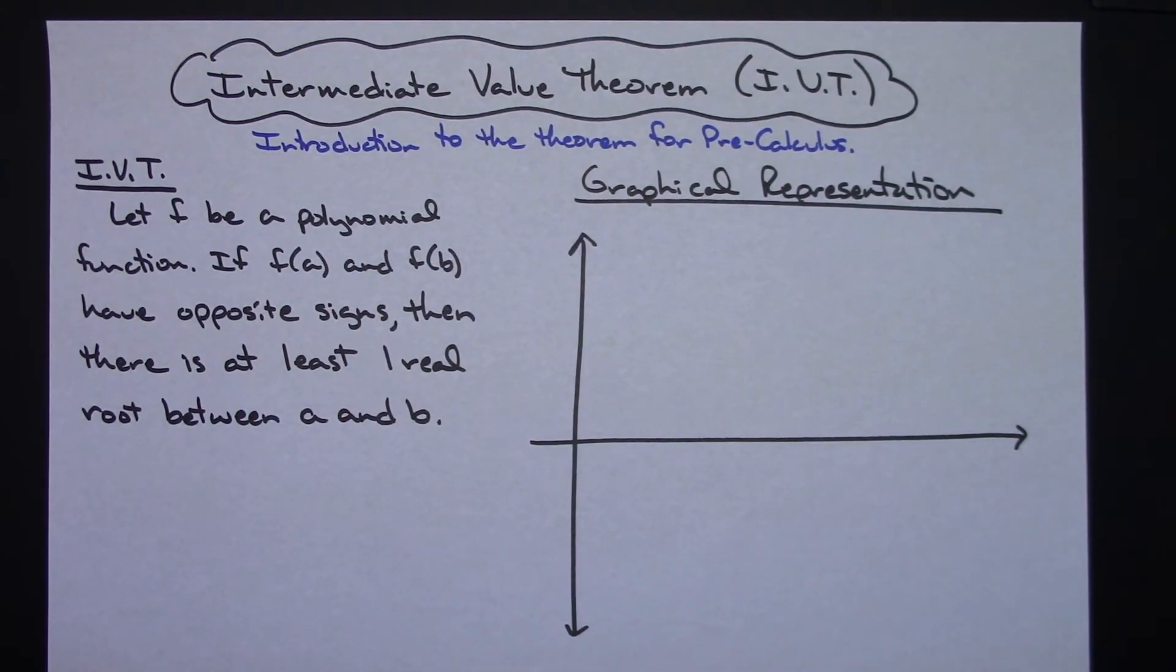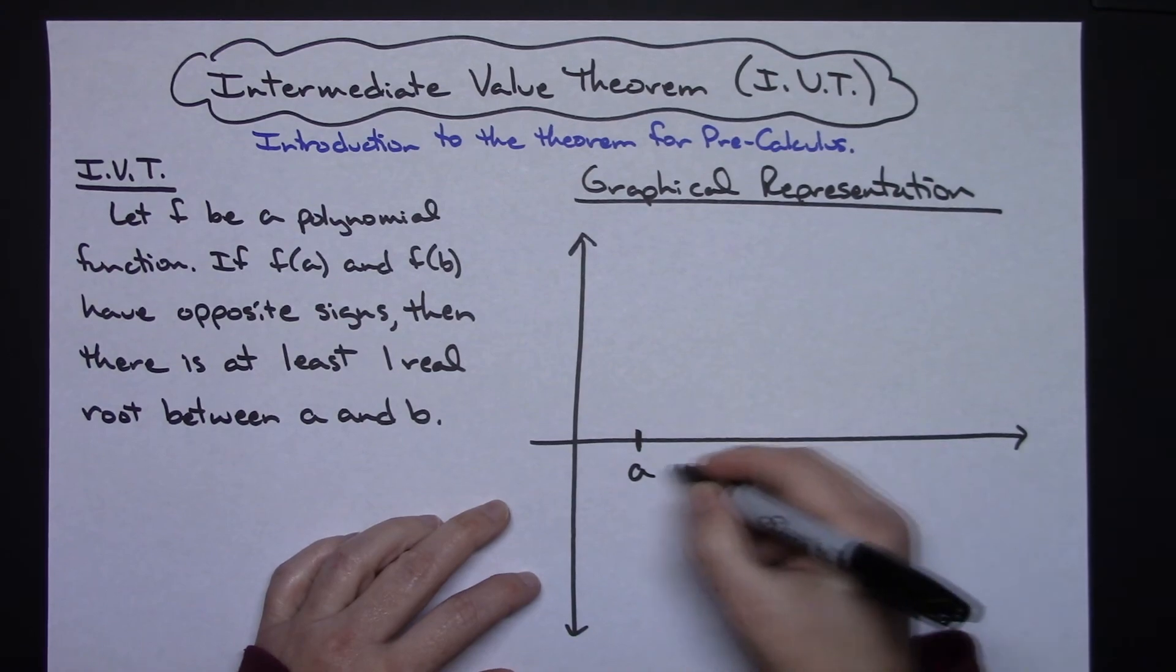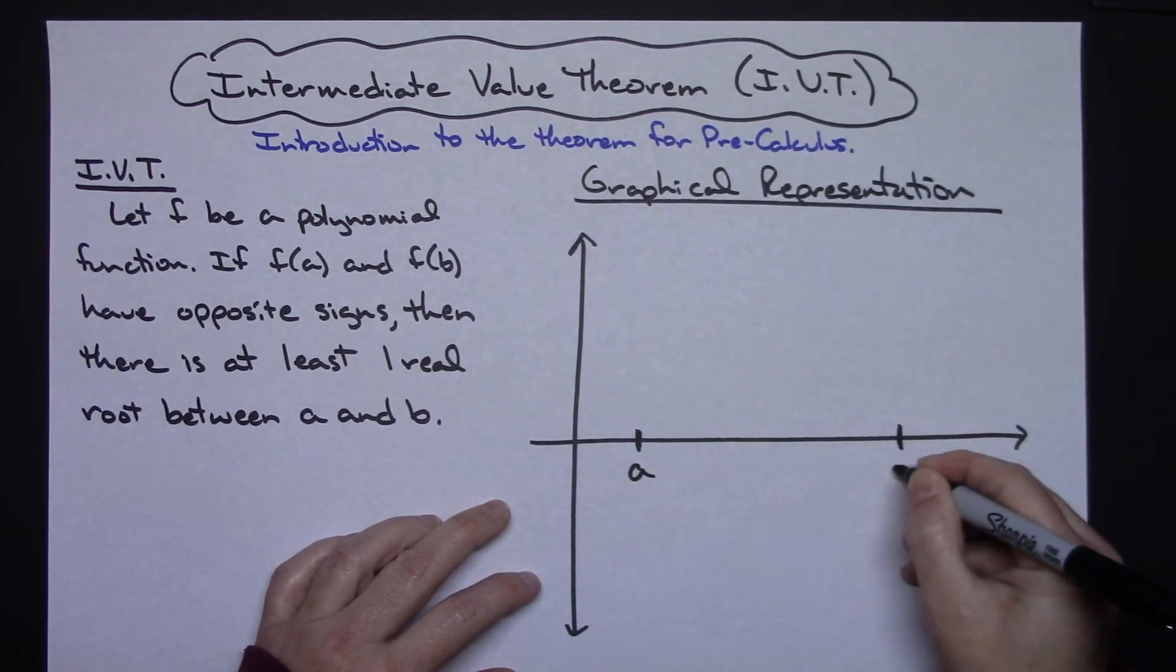Could be more, but there has to be at least one. So maybe let's suppose our interval here is going to be A and our interval over here is going to be B.